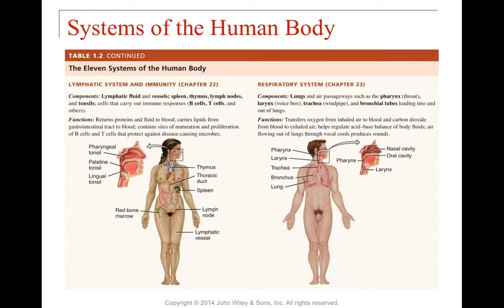The lymphatic system includes the spleen, thymus, lymph nodes, tonsils, lymphatic fluids, and the vessels that carry lymphatic fluid throughout the body. Specialized cells inside the system — including B cells and T cells — carry out the immune response. The function of the lymphatic system is to return proteins and fluid back to the blood, pick up lipids from the gastrointestinal tract, and provide sites for maturation of B and T cells, which protect us against disease-causing microbes.